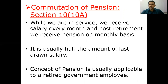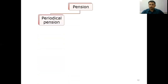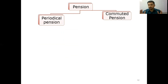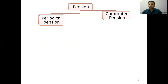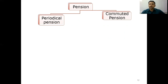Let's look at the concept of pension and commutation of pension. Pension can be classified as periodical pension or commutation of pension. Periodical means, just like salary, receiving pension on a monthly basis post retirement, whereas commutation of pension means taking pension in a lump sum. For example, if the pension amount is one lakh rupees and four-fifths of that — say 80,000 — is commuted, then receiving that pension in a lump sum is called commuted pension.